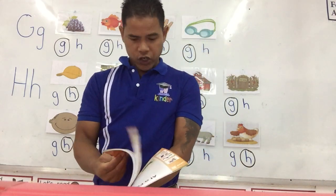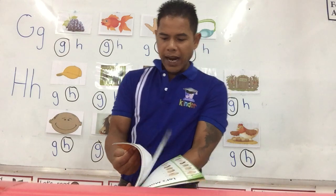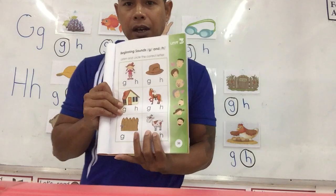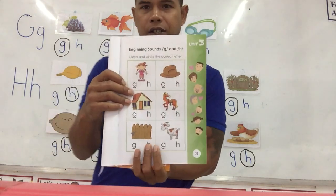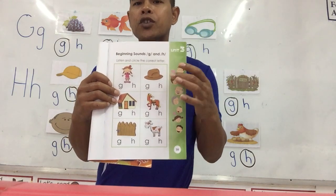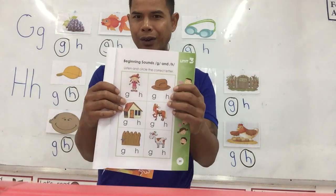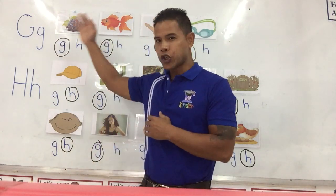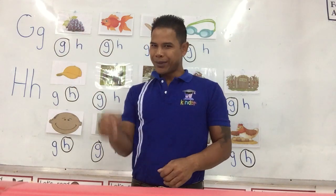In your worksheet, you have to differentiate the letter H or the letter G. Look at the picture — which one does it start with? If it starts with the letter G, circle the letter G. If it starts with the letter H, circle the letter H. That brings us to the end of our lesson of letter G and letter H — the gah sound and the H sound. Bye bye!